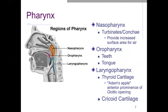In the nasopharynx we have our turbinates, also known as conchae, which provide the increased surface area for the air to come in contact with, creating turbulence that warms the air. The oropharynx is largely made up of the teeth and the tongue. The laryngopharynx is made up of the thyroid cartilage — often thought of as the Adam's apple — that anterior prominence at the beginning of the trachea, as well as the location of the cricoid cartilage.